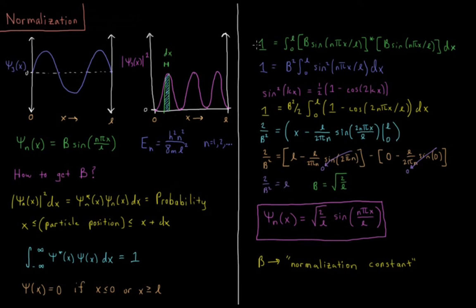So first we'll set up that 1 equals the integral from 0 to L of psi star, complex conjugate of b sine n pi x over L, times the wave function again, b sine n pi x over L, and then times dx.